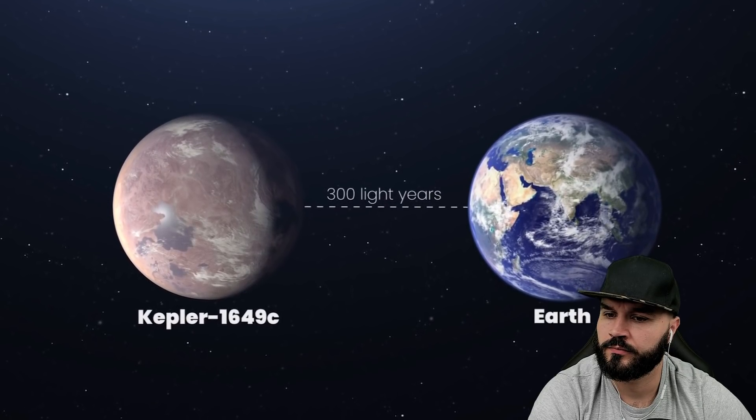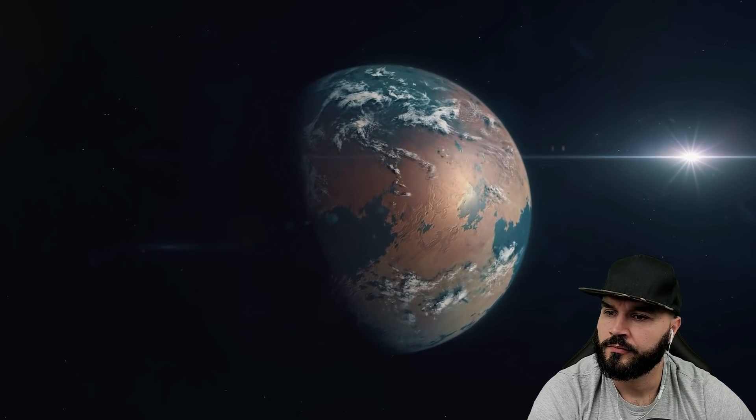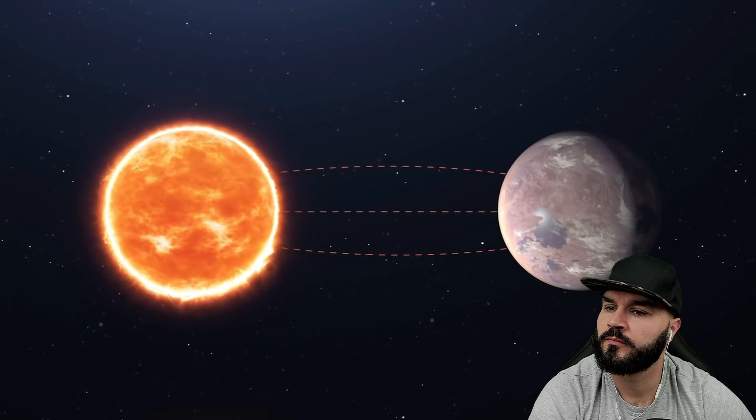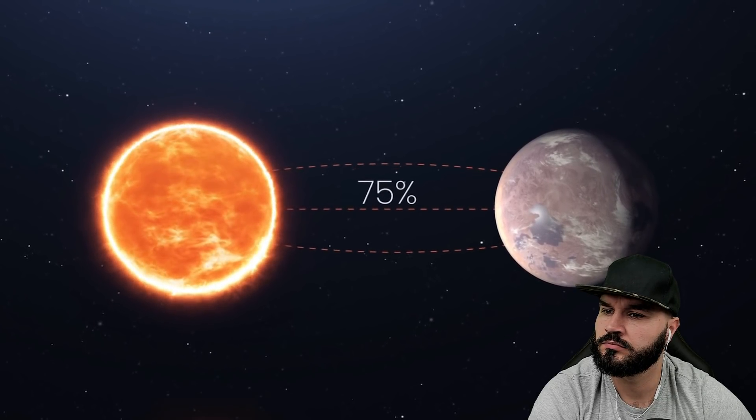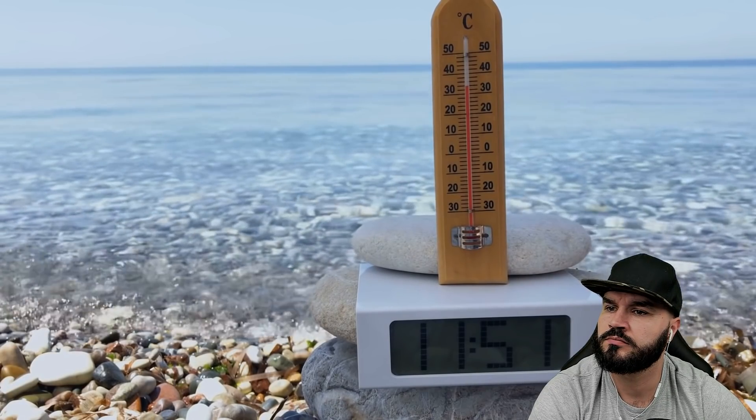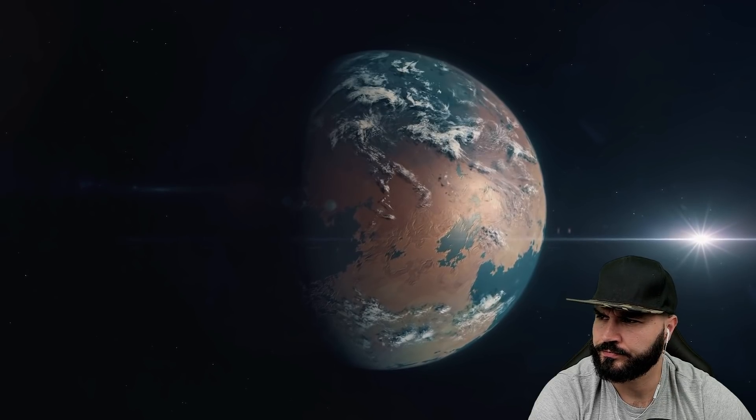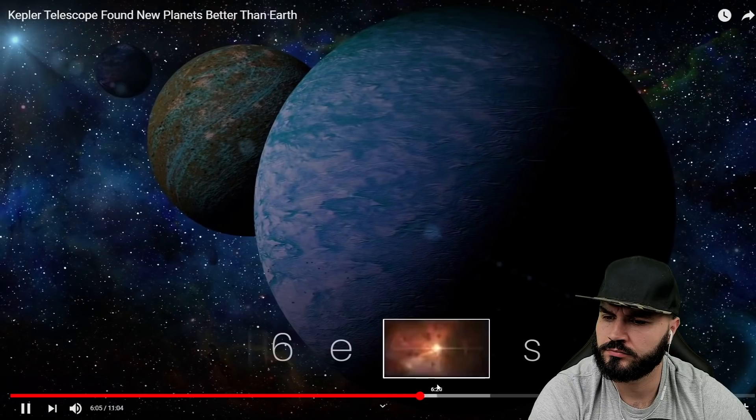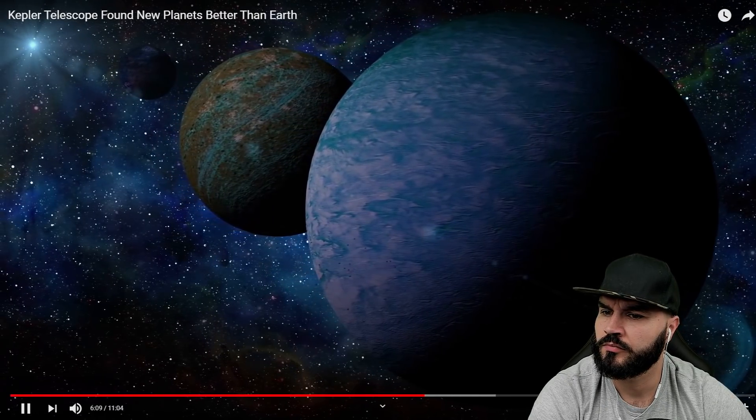Kepler-1649c, located 300 light years from Earth, is very similar to Earth in size and estimated temperature. This newly revealed world is only 1.06 times larger than our own planet. Also, the amount of starlight it receives from its host star, which is also a red dwarf, is 75% of the amount of light Earth receives from our Sun, meaning the exoplanet's temperature may be similar to our planet's as well. Kepler-1649c provides yet another example of an Earth-sized planet in the habitable zone of a red dwarf star.